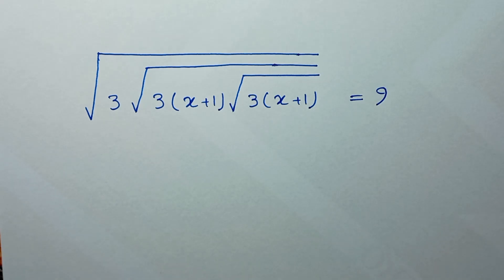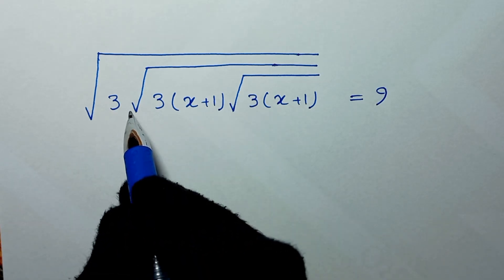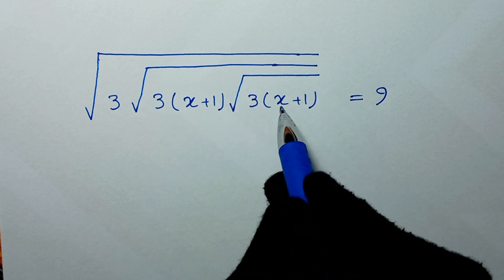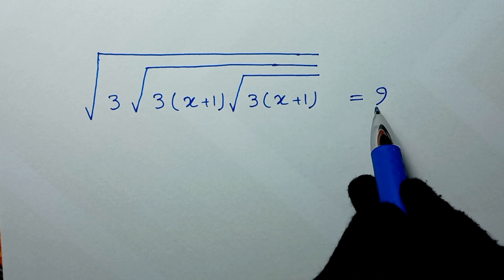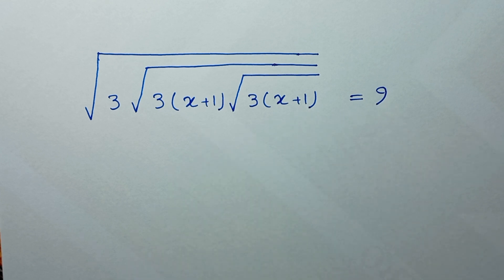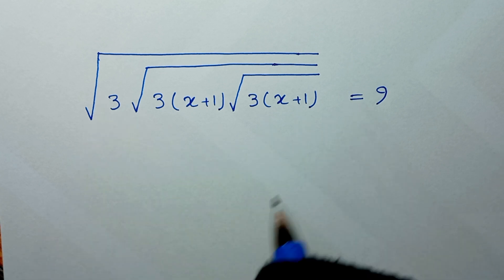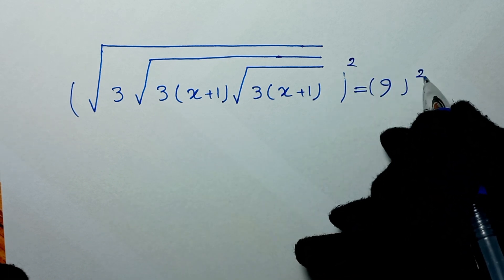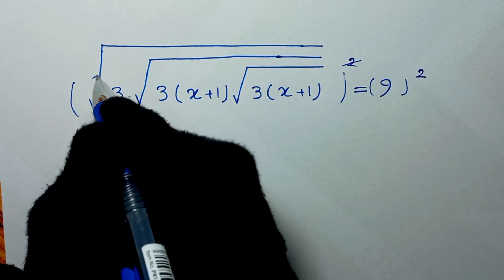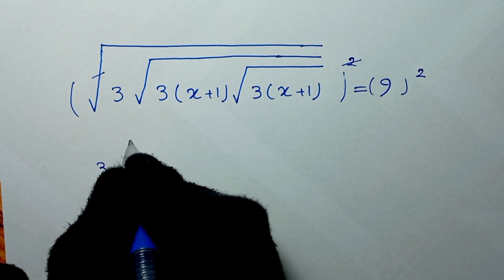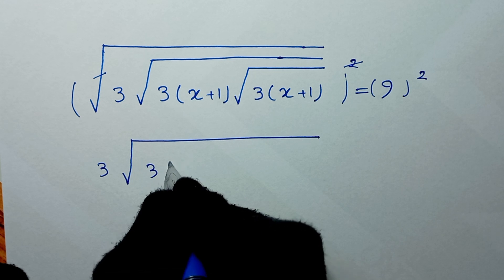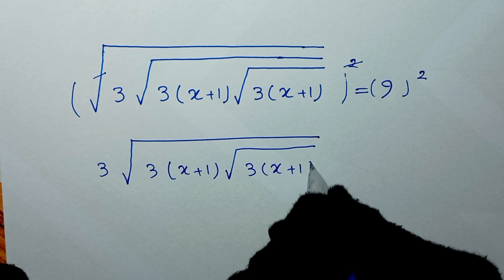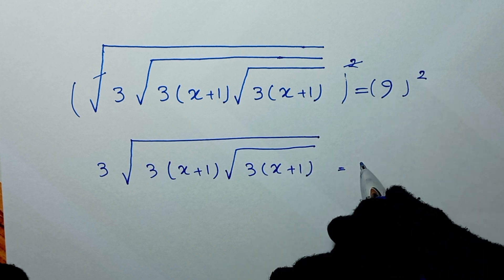Hello my friends, welcome to solve this math problem: square root of 3 times square root of 3x+1 times square root of 3x+1 is equal to 9, to find the values of x. In the first step, we square both sides of this equation. This power of 2 will cancel this square root, and it will be 3 times square root of 3x+1 times square root of 3x+1 is equal to 9 squared, which is 81.